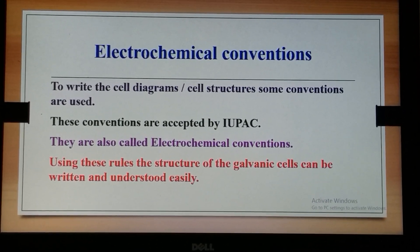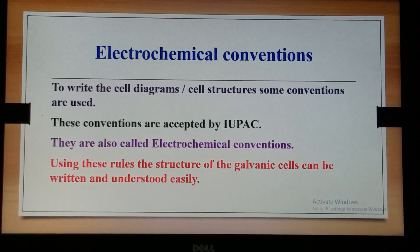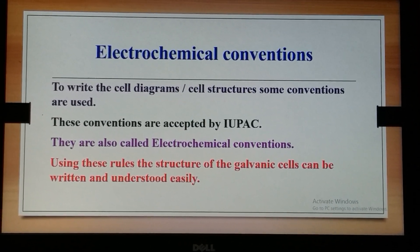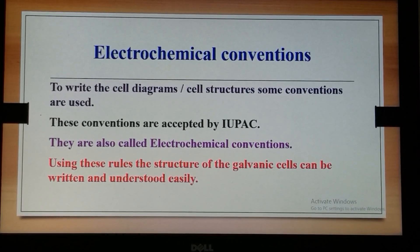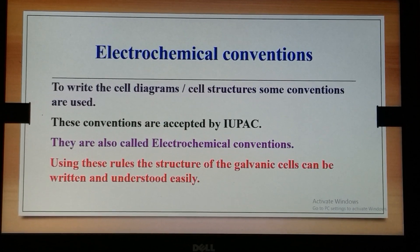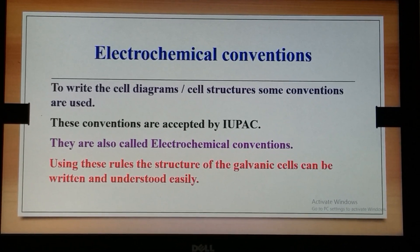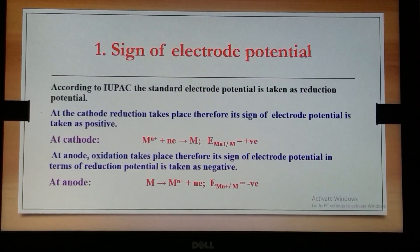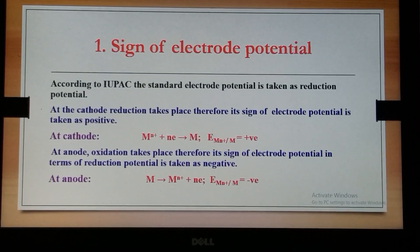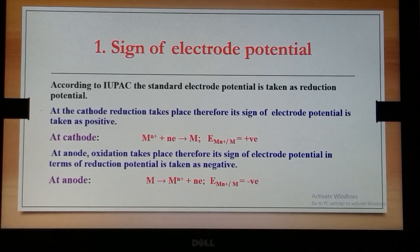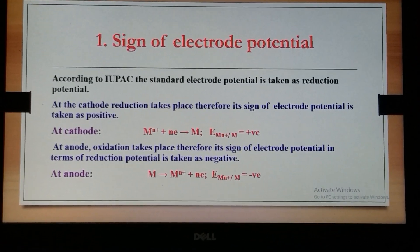There are a few conventions, and with the help of those conventions we can write the galvanic cell structure very easily. Let us understand how to write the structure. The first thing which comes is the sign of the electrode potential.